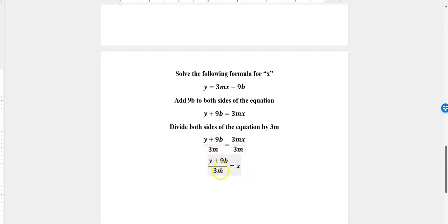Over here, this is it—that's all we have. Could you have gone a step further and said y over 3m plus 9b over 3m? Yes, you could separate those out because 3m goes under both of those terms.